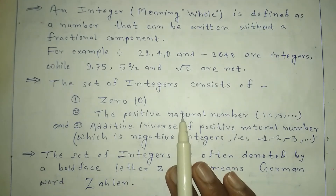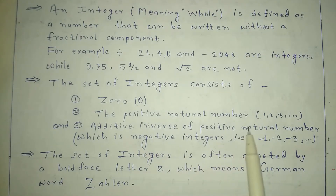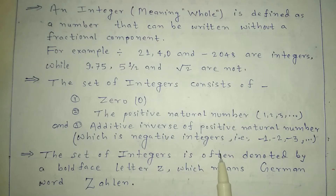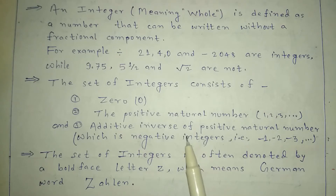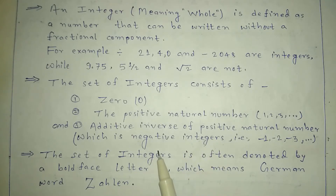The set of integers consists of 0, the positive natural numbers (1, 2, 3, ... infinitely), and the additive inverses of positive natural numbers, which are the negative integers: -1, -2, -3, and so on. So the set of integers includes 0, all positive natural numbers, and all negative numbers.